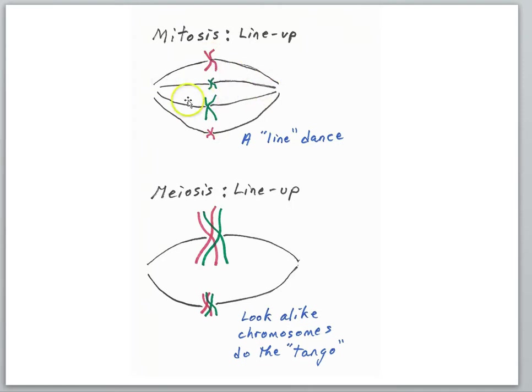And what's going to happen in mitosis is that the duplicates are going to detach, and then one of each is going to go to the opposite side of the cell. And then the cell will split once. But in meiosis, something interesting happens. The two look-alike chromosomes are going to get together.